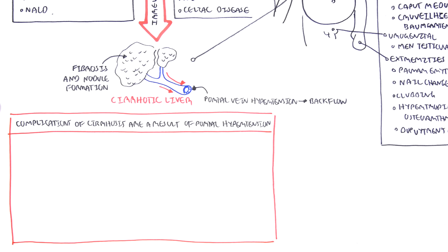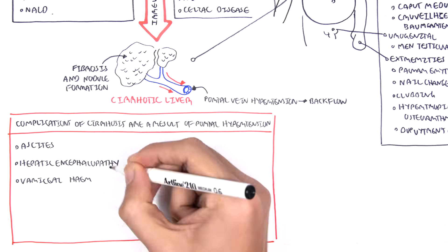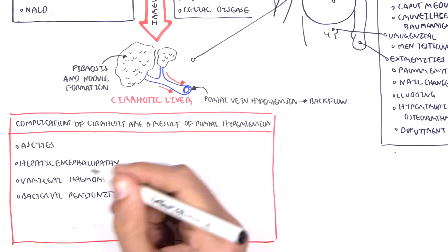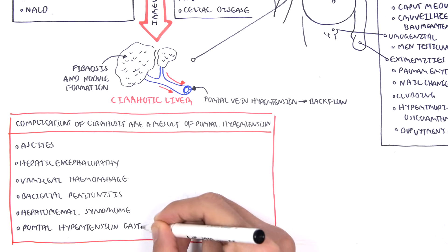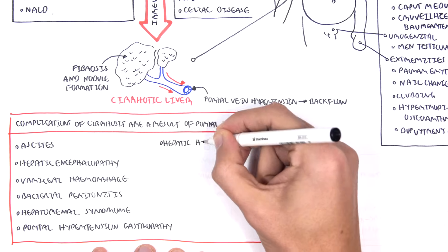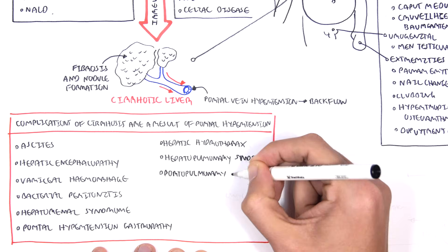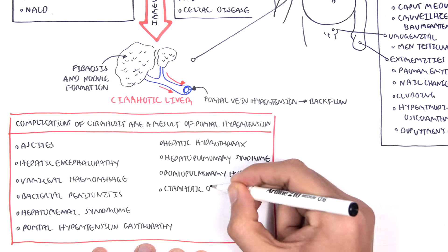These complications include ascites, hepatic encephalopathy, variceal hemorrhage, bacterial peritonitis, hepatorenal syndrome, portal hypertension gastropathy, hepatic hydrothorax, hepatopulmonary syndrome, portopulmonary hypertension, and cirrhotic cardiomyopathy.